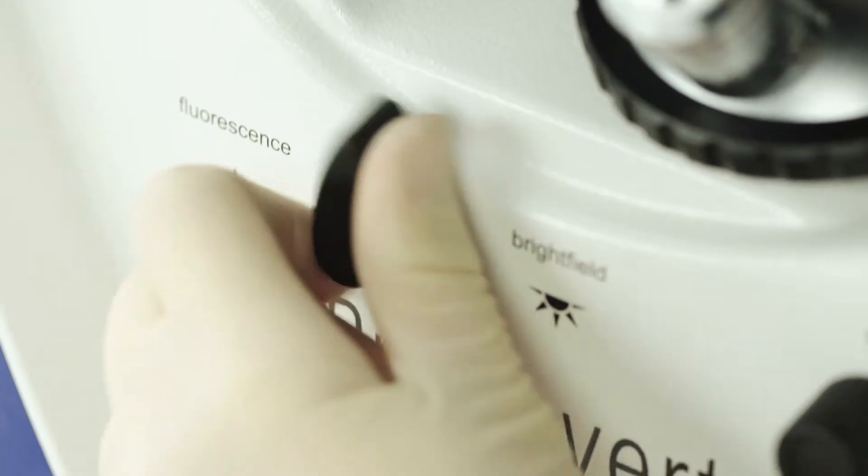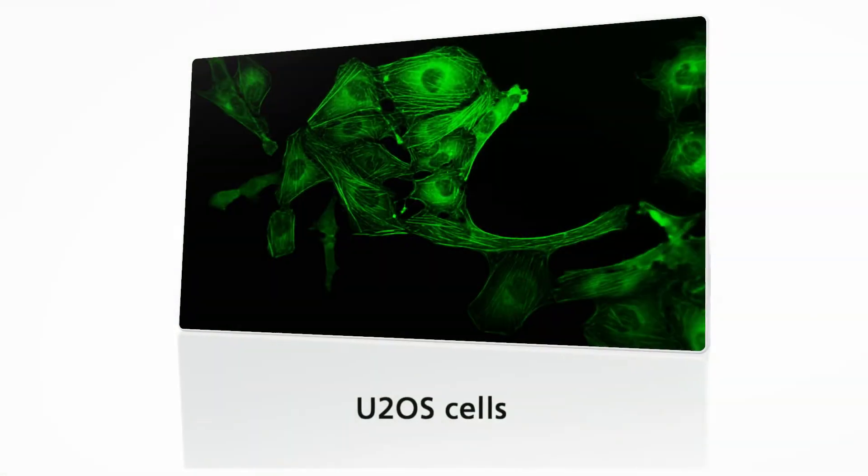Or with just one setting, simply switch to fluorescence contrast to observe cells marked with GFP.